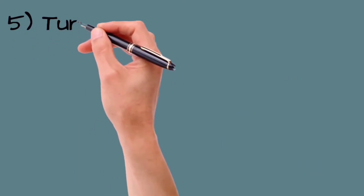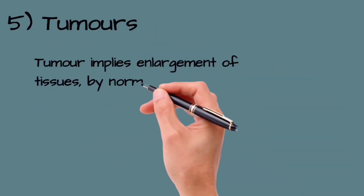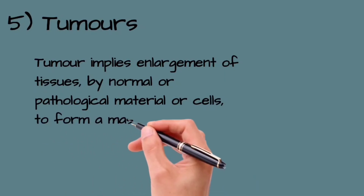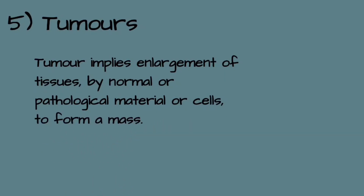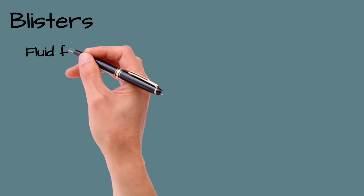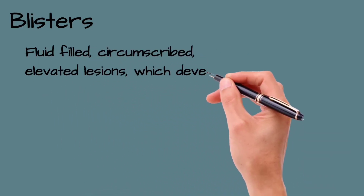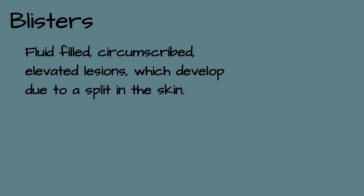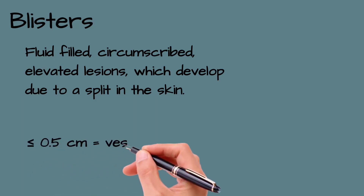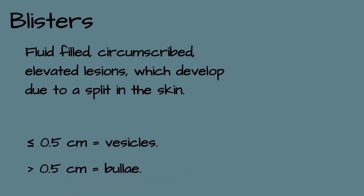Tumor implies enlargement of tissues by normal or pathological material or cells to form a mass. Blisters are fluid-filled, circumscribed, elevated lesions due to a split in the skin. If less than or equal to 0.5 cm they are called vesicles, and if more than 0.5 cm they are called bullae.